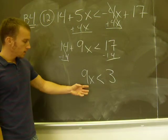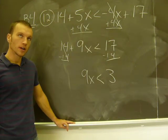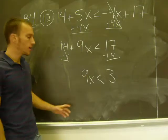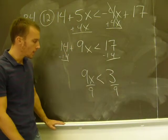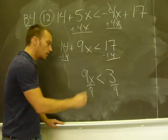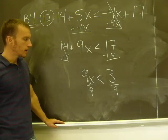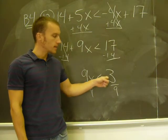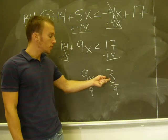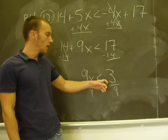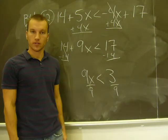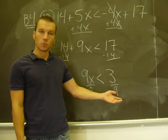And a one-step way to isolate x is to divide by 9. So 9 divided by 9 is 1, that's why I did that, to get x by itself. And I now have the inequality x is less than 3 ninths. Something should stick out about that 3 ninths - it's reducible. I can take 3 into 3 and 9, and 3 ninths is really the same as 1 third.